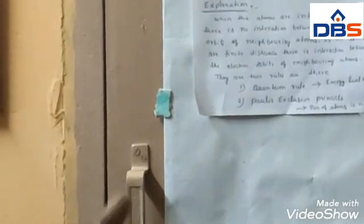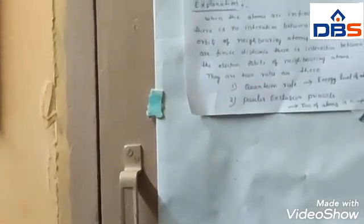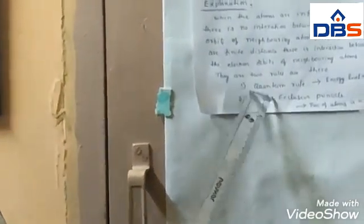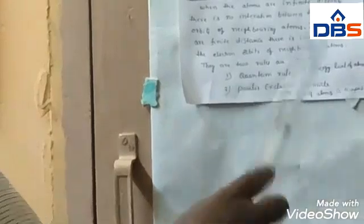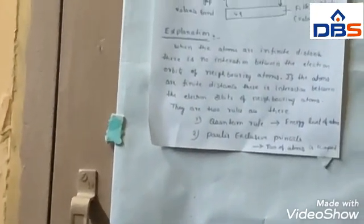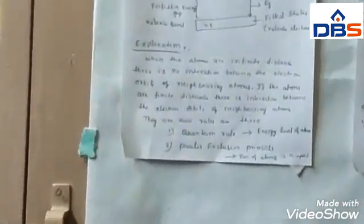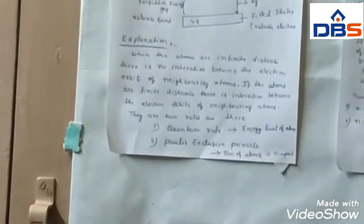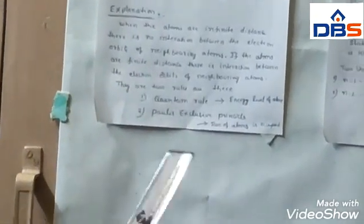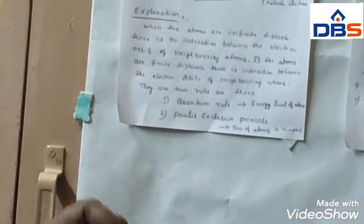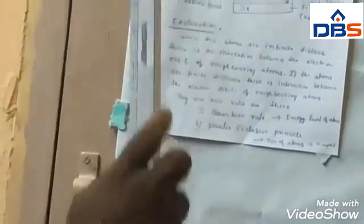How are the valence band and conduction band formed? There are two rules. One of the rules is nothing but the quantum rule. Another rule is nothing but the Pauli exclusion principle. What is meant by the quantum rule? It tells about the energy levels of the atoms — each individual atom has its own distinct energy levels. What is meant by the Pauli exclusion principle? In each and every energy level, a maximum of two electrons are occupied.